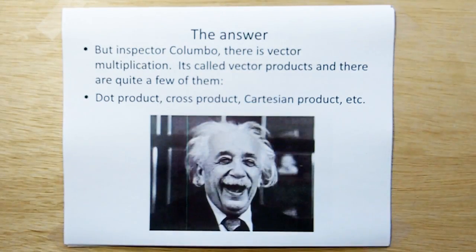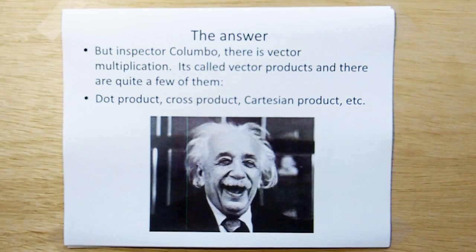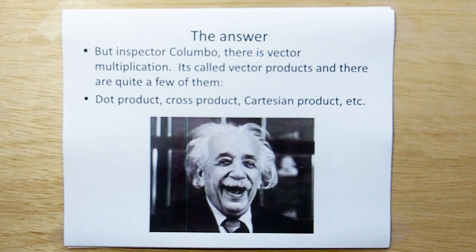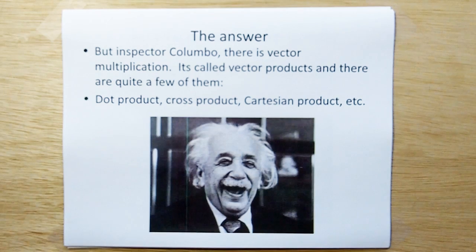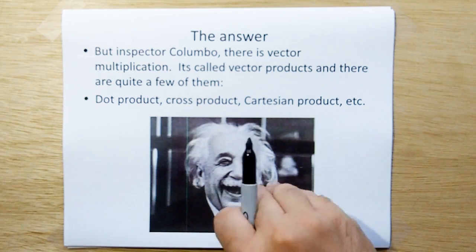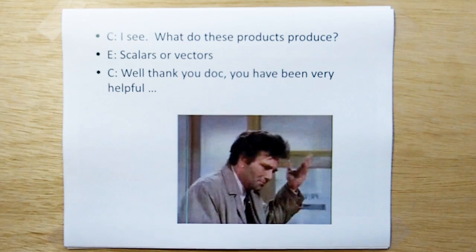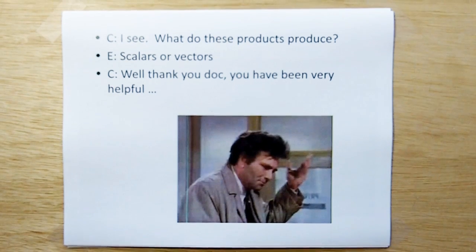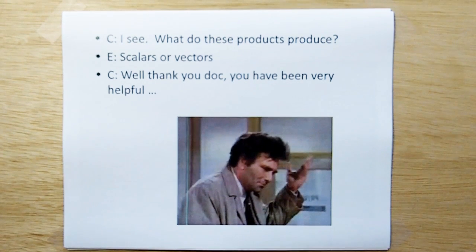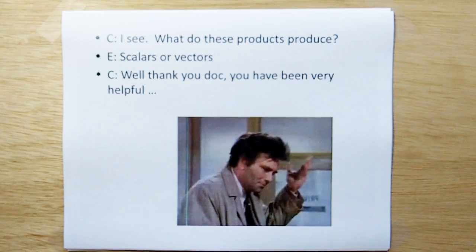Einstein says, 'But Inspector Columbo, there is vector multiplication. It's called vector products and there are quite a few of them. There's the dot product, the cross product, the Cartesian product, the inner product, and so on.' Columbo says, 'Oh I see. But what do these products produce?' And Einstein says, 'Well, they produce either scalars or vectors.'